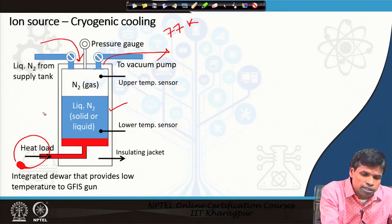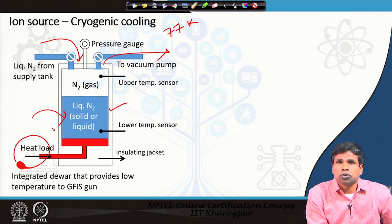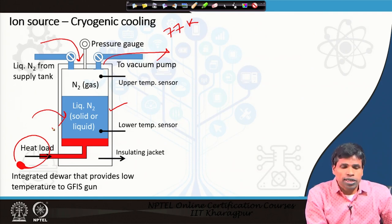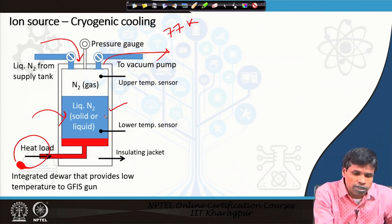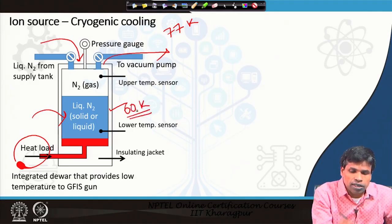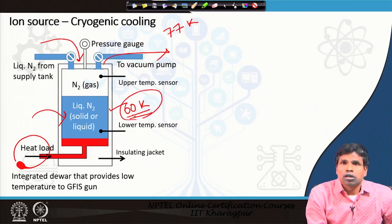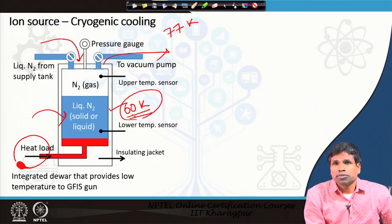Therefore, the liquid nitrogen must be solidified. When it is solidified, the temperature goes down to around 60 Kelvin. Using that solid nitrogen, we can cool the tip to a range of 75 to 80 Kelvin.